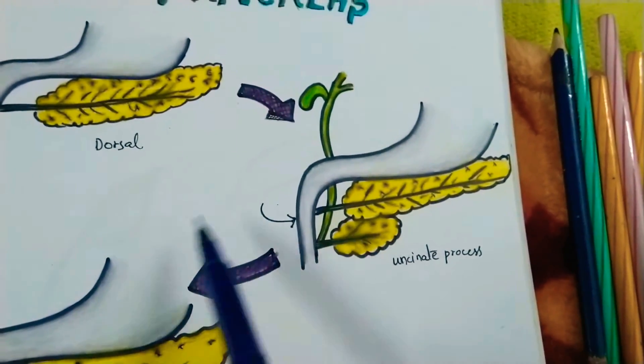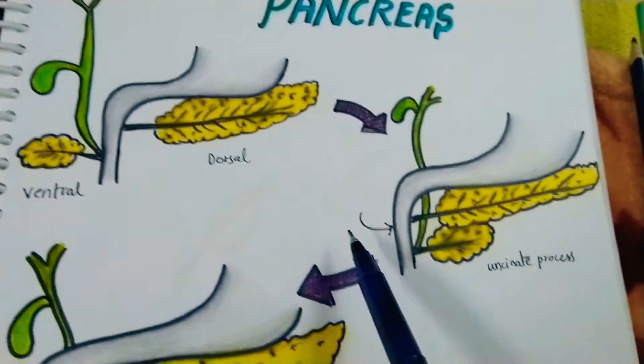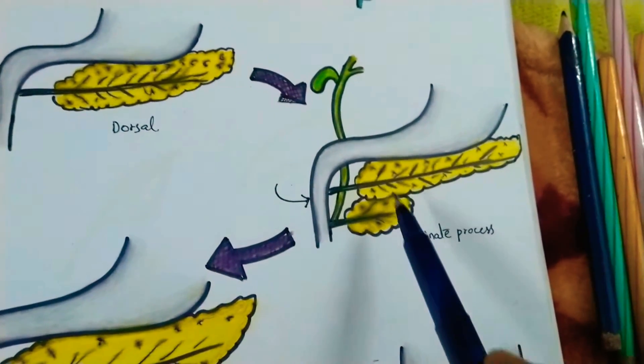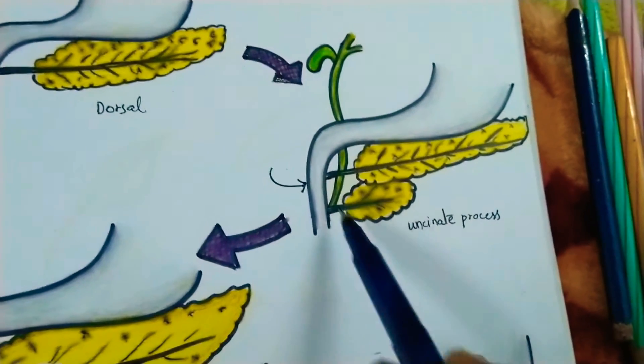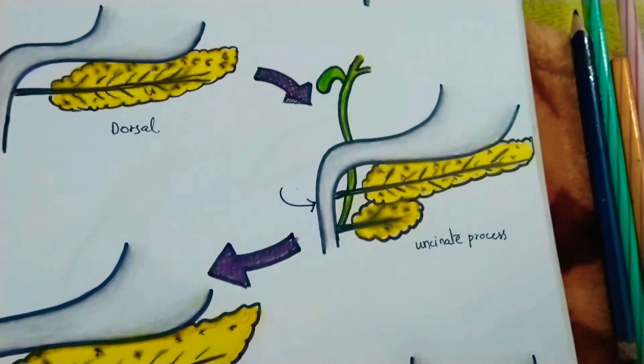Following the rotation of the gut, the ventral pancreatic bud rotates and fuses with the dorsal pancreatic bud, which further forms the uncinate process of the pancreas.